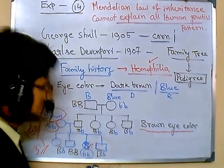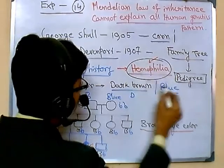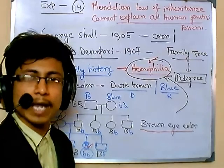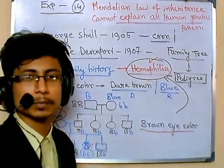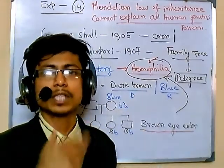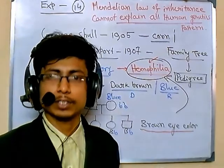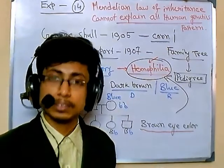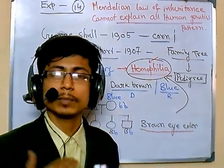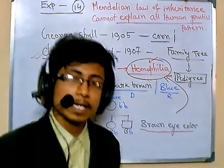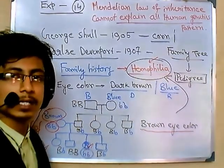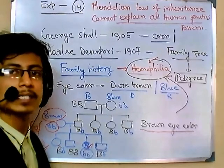The example for this is hemophilia. It was later found that all the different traits Mendel actually studied are present in somatic chromosomes. As we discussed in earlier experiments, there are chromosomes in our body responsible for determining sex, called sex chromosomes. All the traits Mendel studied are present in somatic cells and somatic chromosomes, and those chromosomes carry all the Mendelian law of inheritance.